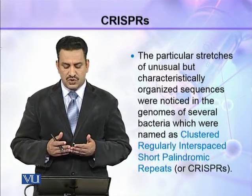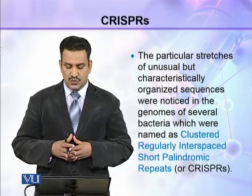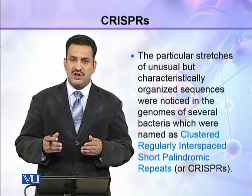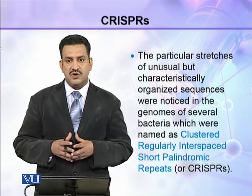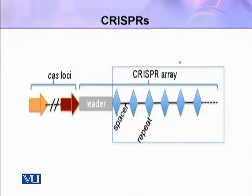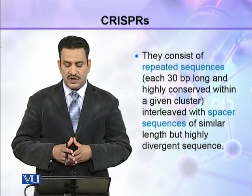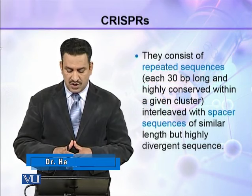Particular stretches of unusual but characteristically organized sequences were noticed in the genomes of bacteria, and these sequences were named as Clustered Regularly Interspaced Short Palindromic Repeats, abbreviated as CRISPRs. Here you can see the CRISPR, with the Cas locus and the CRISPR array. The CRISPR array contains a leader sequence followed by a repeated pattern of repeat, spacer, repeat, spacer, and repeat. These repeated sequences are each about 30 base pairs long.